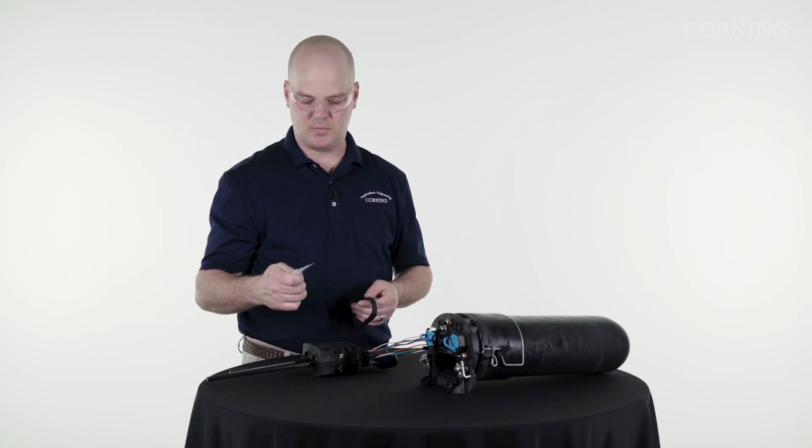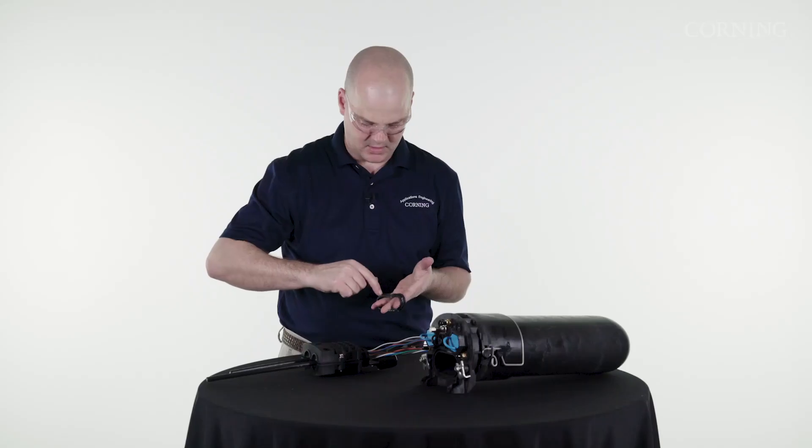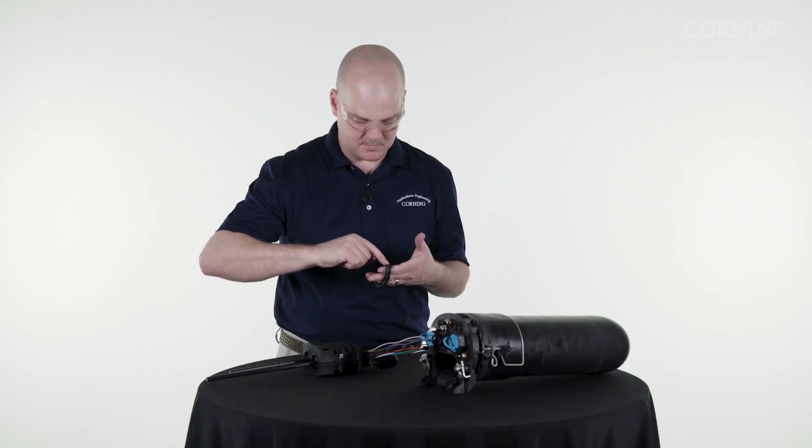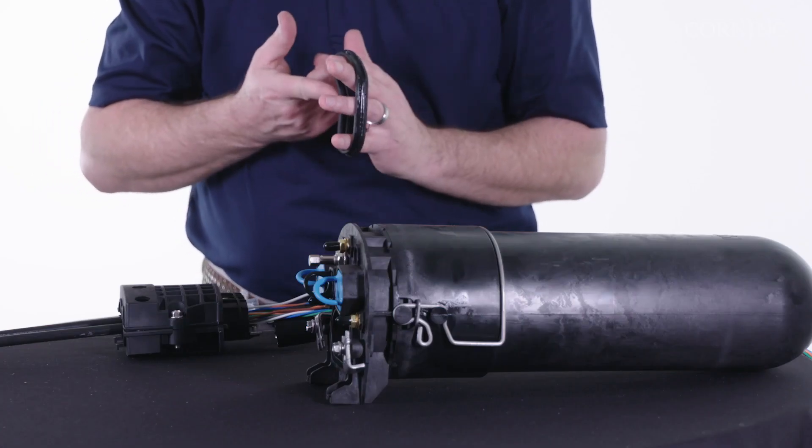So I'll take the silicone, put a little bit on the outside, spread that out with my fingers. This provides lubrication as well as sealant.